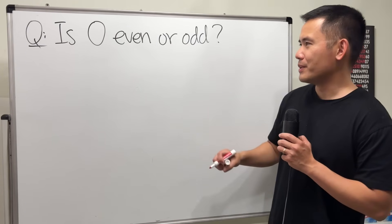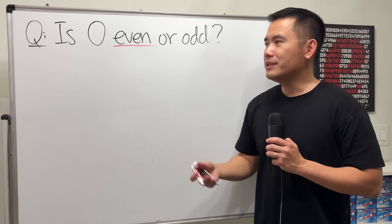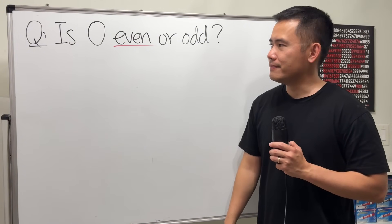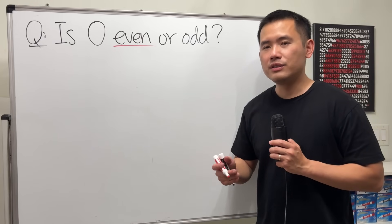First, most people will say 0 is even and then we are done, right? But why is it even? Well, we have to remember what an even number is. By definition, it's just a multiple of 2.